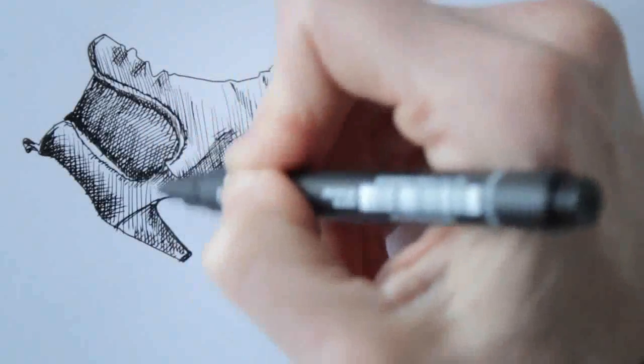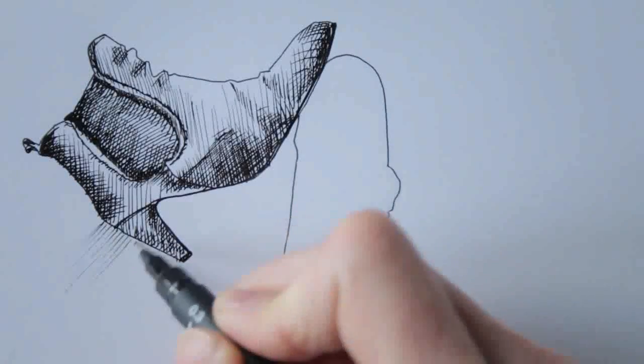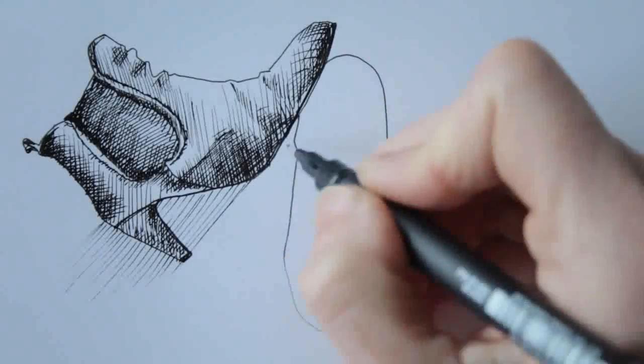The shoes are on the floor so of course they need a cast shadow, which I add using single hatching lines.